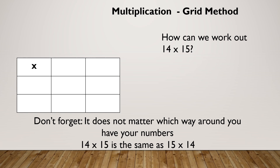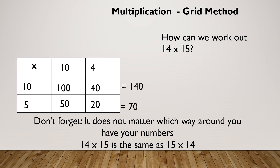Let's look at a slightly different one: 14 times 15, a little bit bigger this time. It doesn't matter which way round we have our numbers — 14 times 15 and 15 times 14 are the same thing. I'm going to break down into place value: 14 is 10 and 4, and 15 is 10 and 5. Filling in the grid: 10 times 10 is 100, 10 times 4 is 40, 10 times 5 is 50, and 5 times 4 is 20. Adding across and then down: 140, then 50 and 20 is 70, and those numbers added together gives me 210.